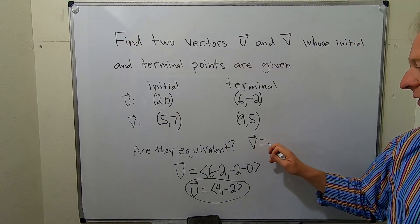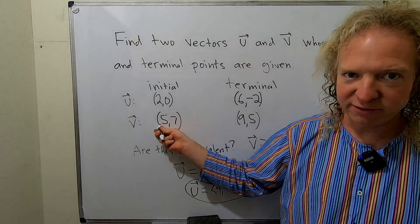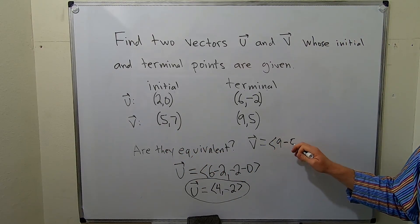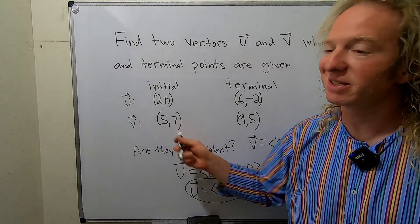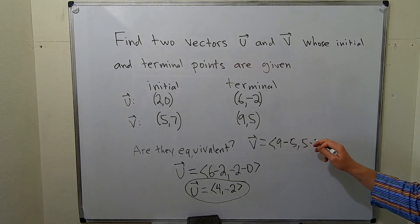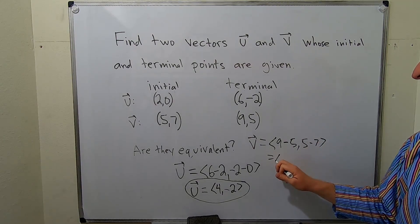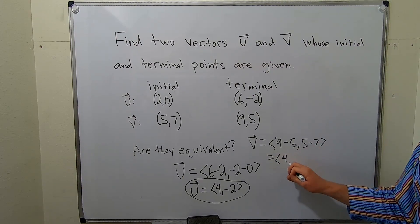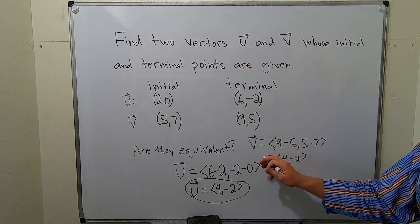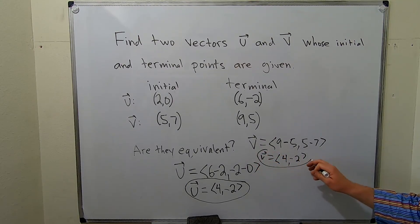Let's do v. It'll be 9 minus 5, which is 4. I'll show the work: 9 minus 5, and then 5 minus 7. This will be 9 minus 5 is 4, and 5 minus 7 is negative 2. So this is our vector v: (4, -2).